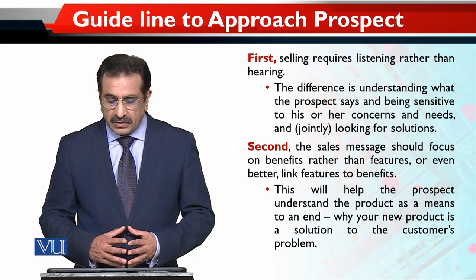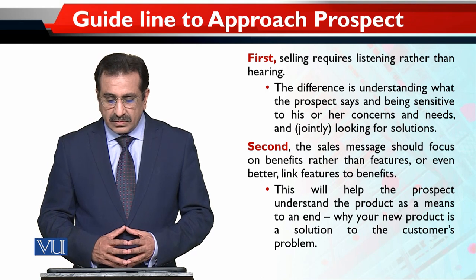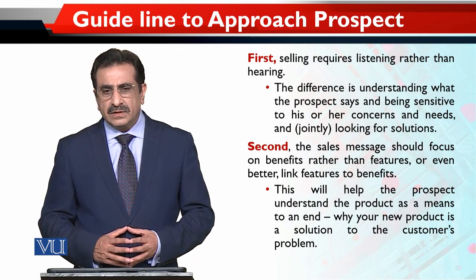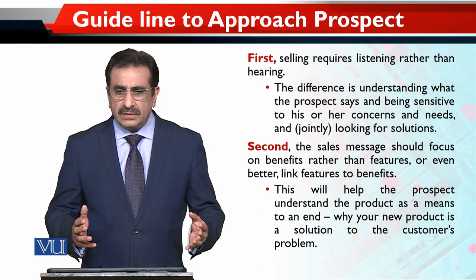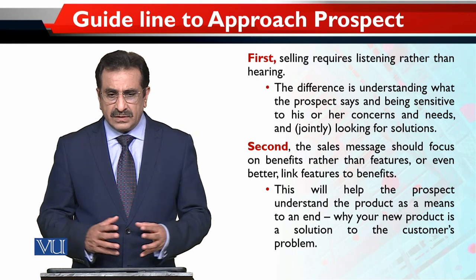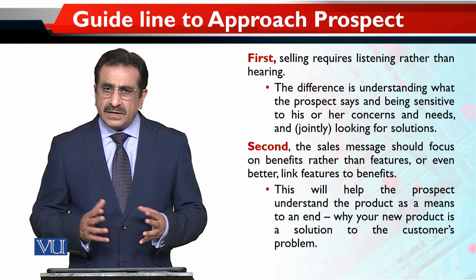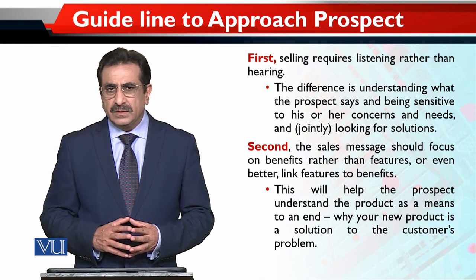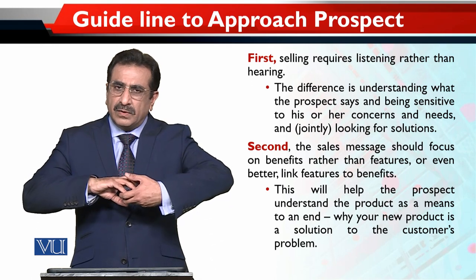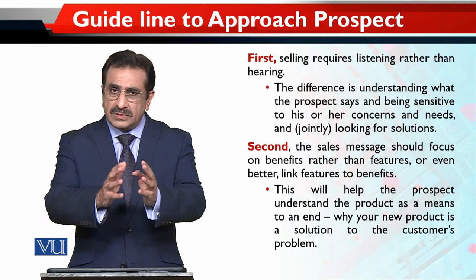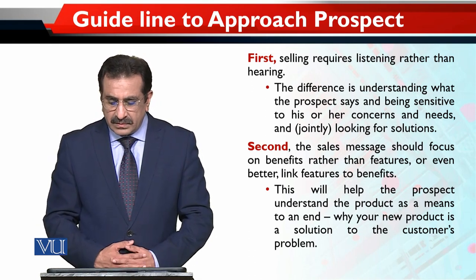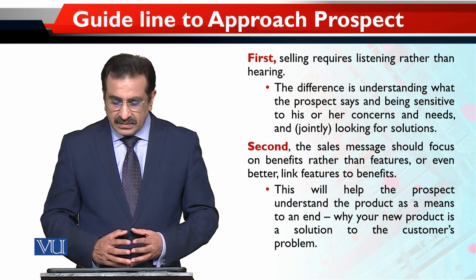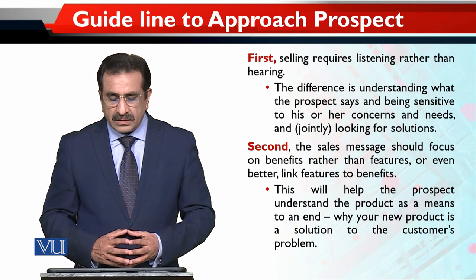Second, the sales message should focus on benefits rather than features — or even better, link features to benefits. Your product has different features; understand how this product can be beneficial to the prospect, or how you can link up the product's benefits with the prospect's requirements and problems. This will help the prospect — your potential customer — understand the product as a means to an end.